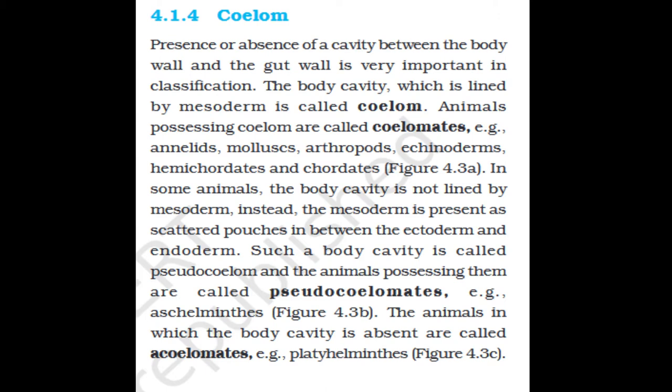Section 4.1.4: Coelom. The presence or absence of a cavity between the body wall and the gut wall is very important in classification. The body cavity lined by mesoderm is called coelom. Animals possessing coelom are called coelomates, e.g., annelids, molluscs, arthropods, echinoderms, hemichordates, and chordates. In some animals the body cavity is not lined by mesoderm; instead, mesoderm is present as scattered pouches between the ectoderm and endoderm. Such a body cavity is called pseudocoelom and the animals possessing them are called pseudocoelomates, e.g., Aschelminthes. Animals in which the body cavity is absent are called acoelomates, e.g., Platyhelminthes.